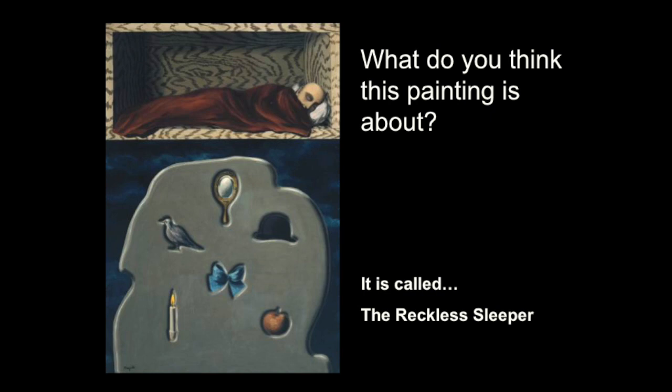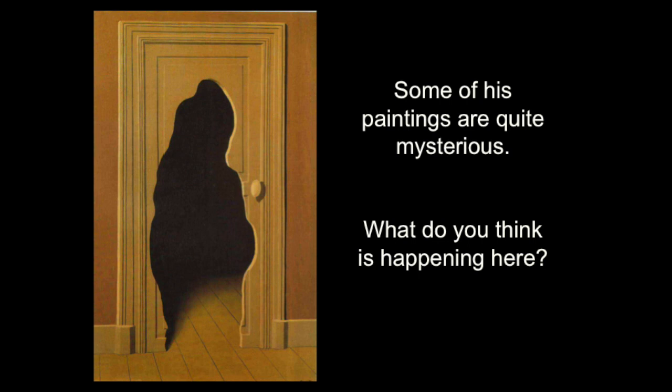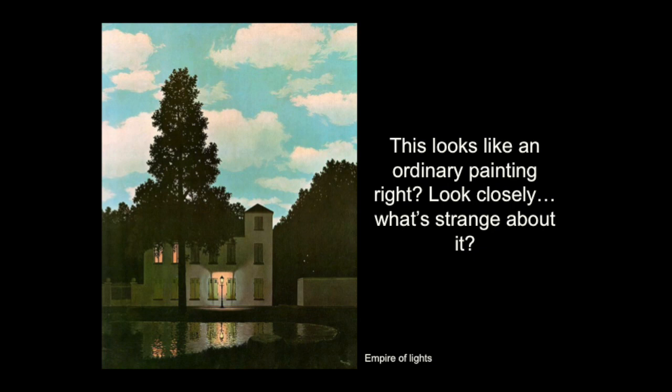Some of his paintings are quite mysterious. What do you think is happening here? This looks like an ordinary painting — look closely. What about it is strange? If you take notice, the sky is a bright, sunshiny day during the day, and then on the bottom, where the house is and the water, it looks a little bit more like nighttime. So he mixed together two times of day and kind of tricked your eye to believe that it was something normal.